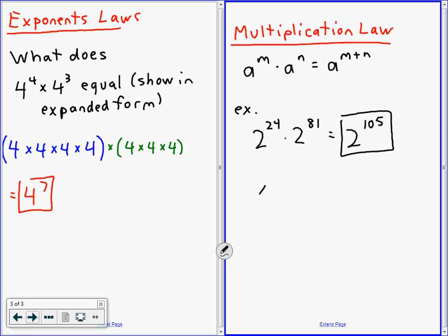One more — just a smaller one. X to the 9 times x to the 3. That's x to the 12, right?